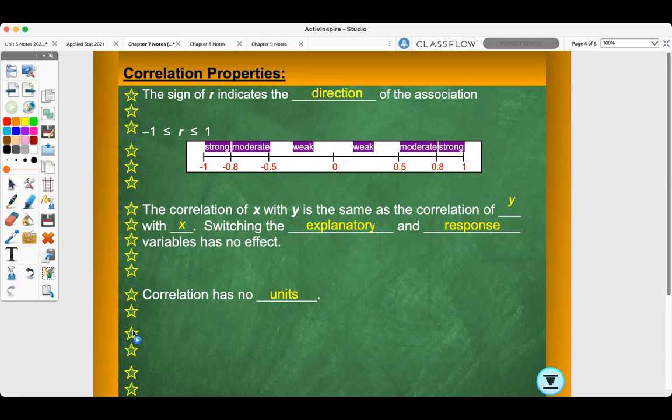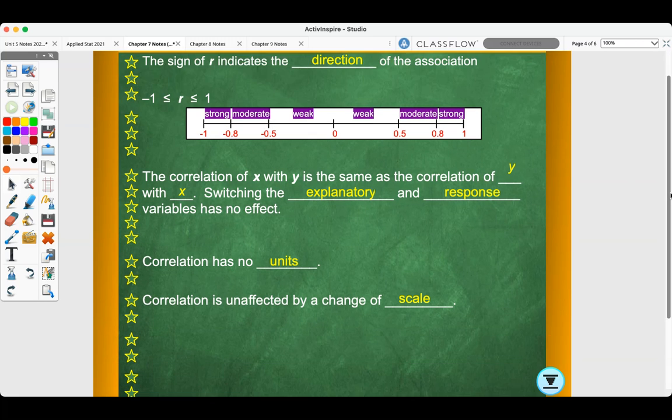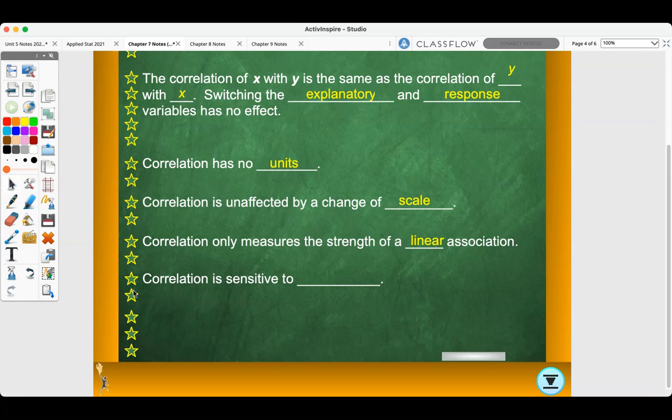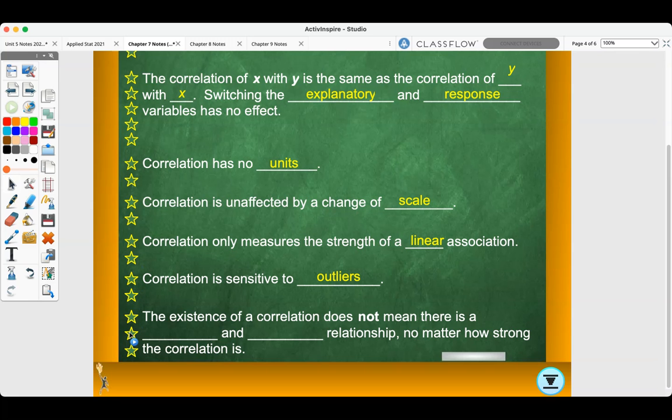Correlation has no units. Correlation is unaffected by a change of scale. Correlation only measures the strength of linear association. Correlation is sensitive to outliers. The existence of a correlation does not mean there is a cause and effect relationship, no matter how strong the correlation is.